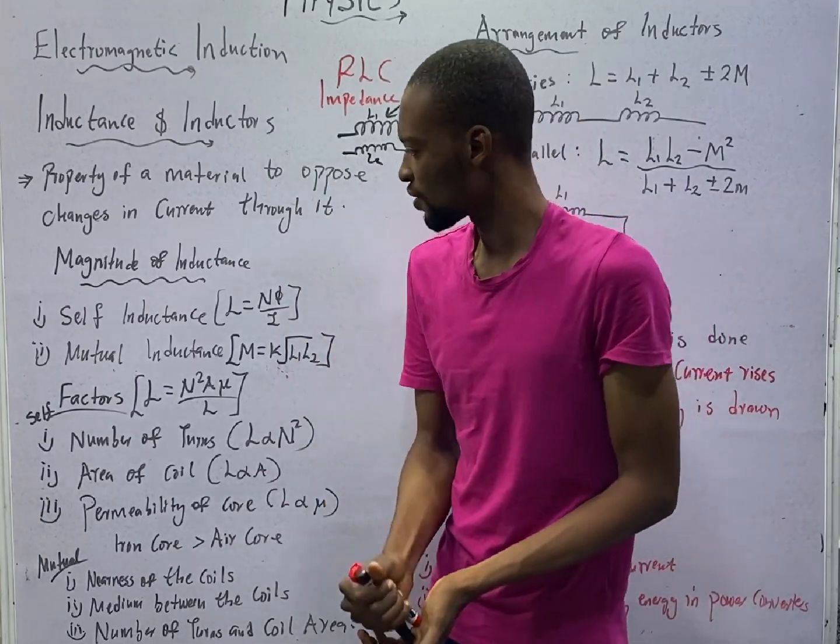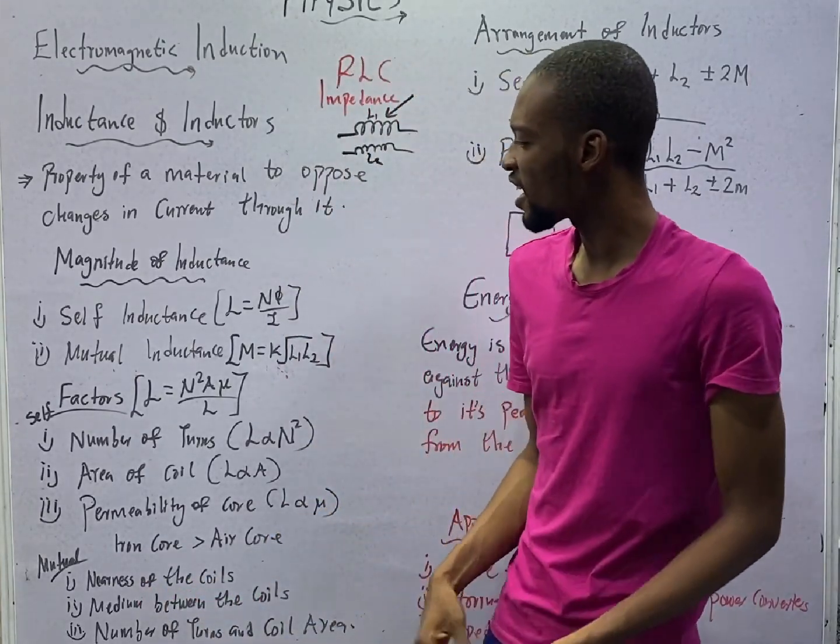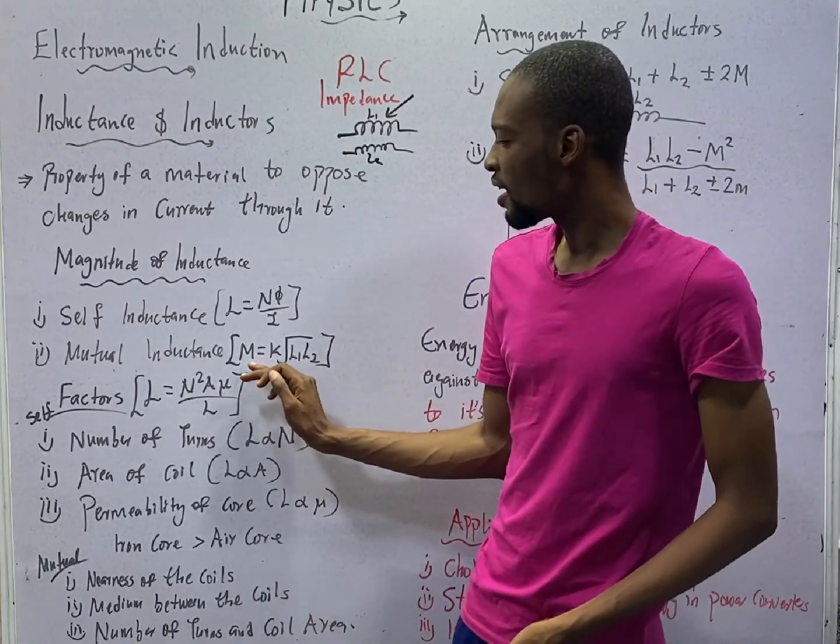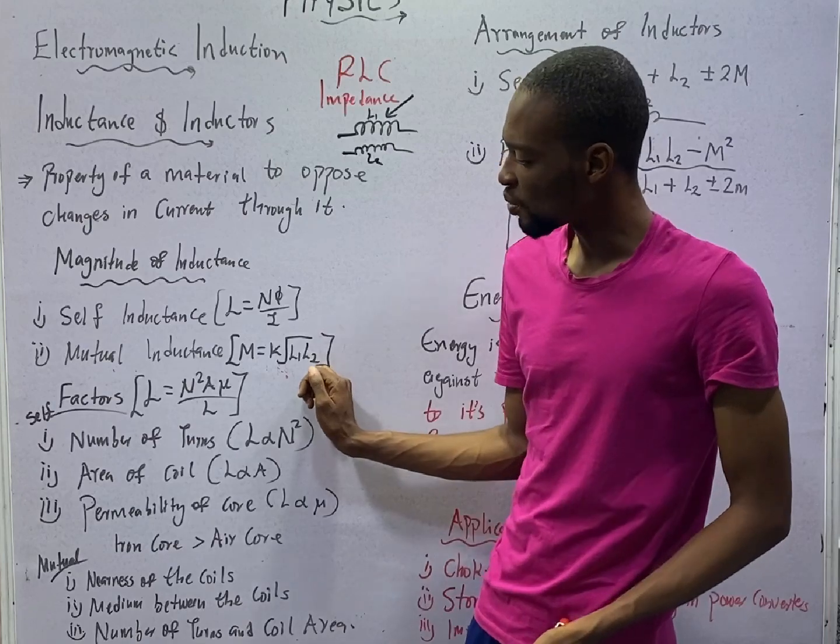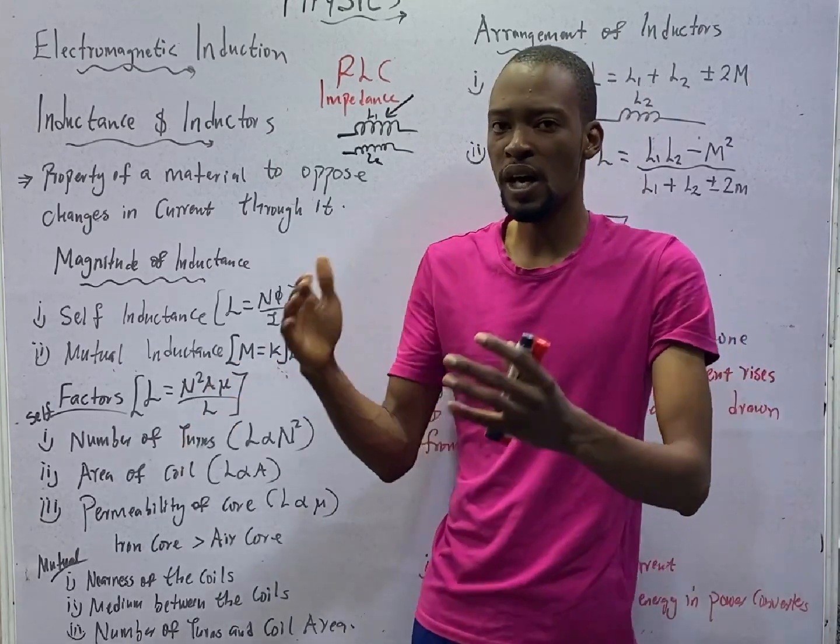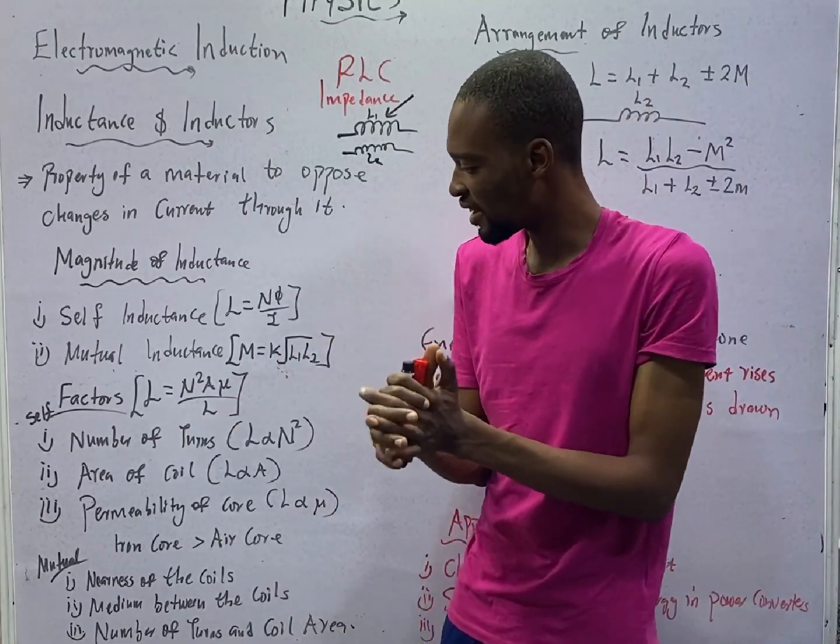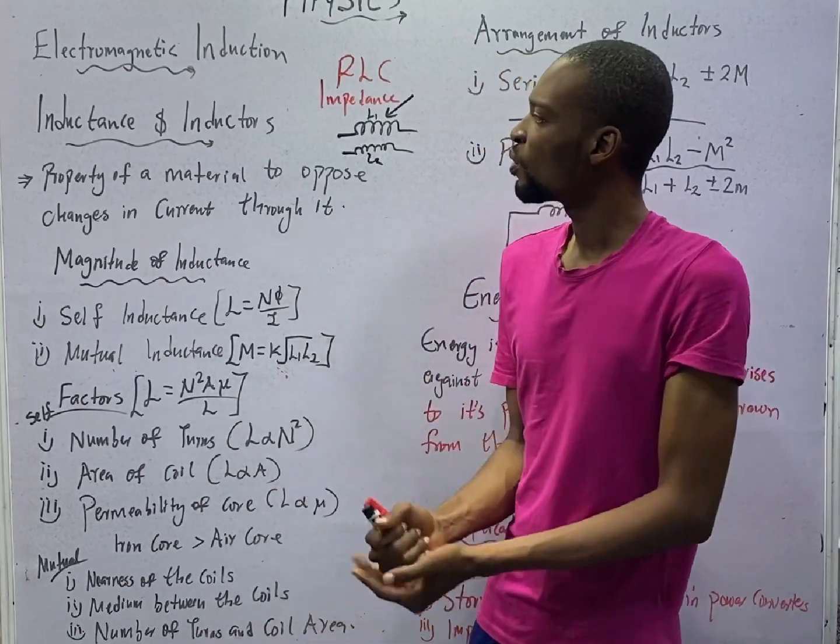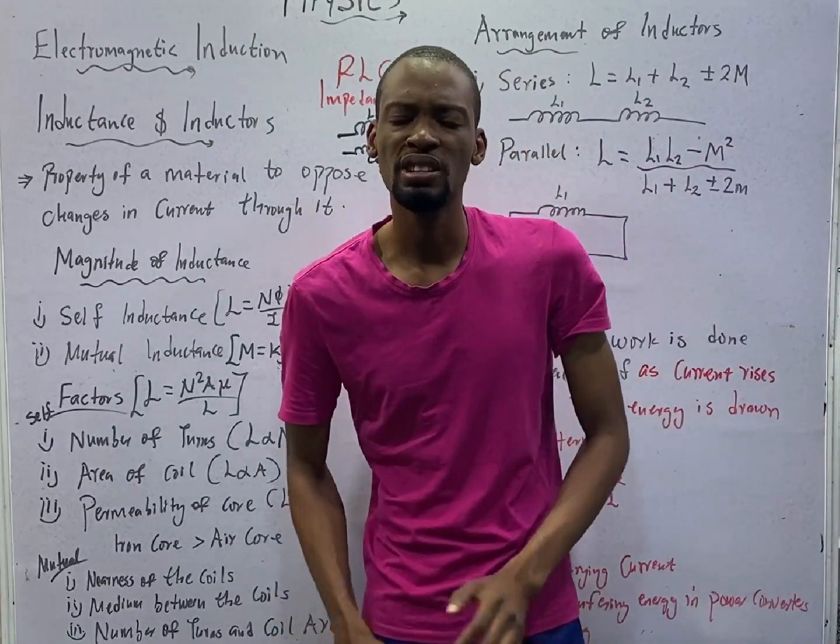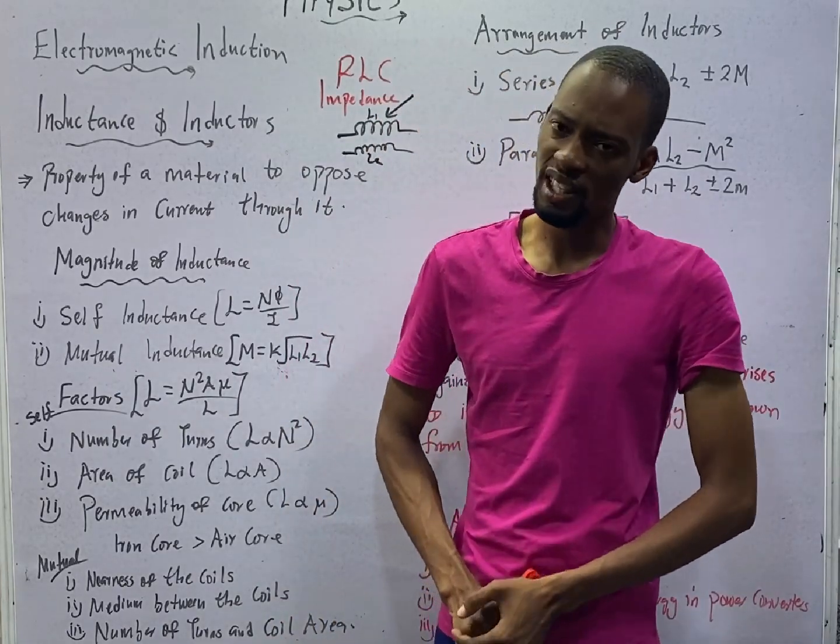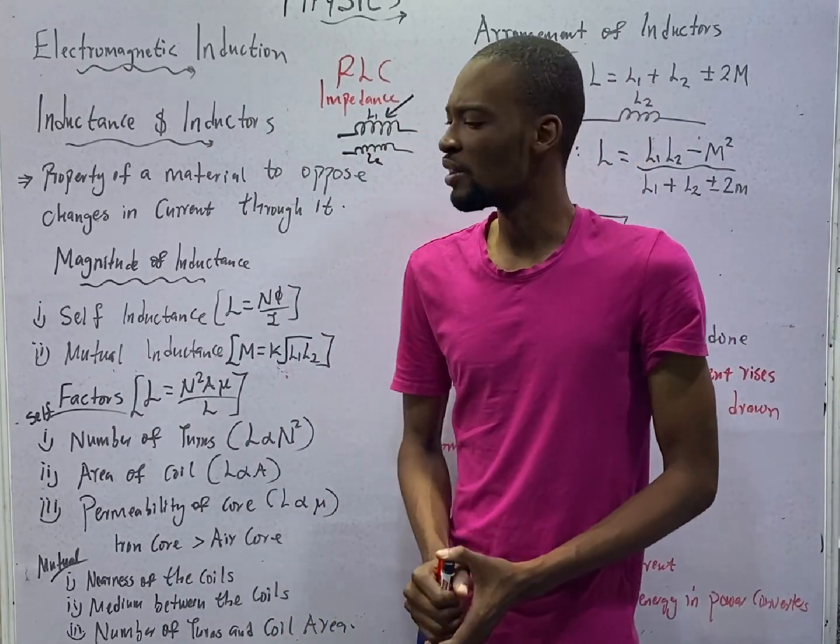This is a JAMB question. So, for mutual inductance, it is represented by M and M is equal to K root L1 L2. And K is the mutual coupling between them. So, we know that self-inductance takes place in only one inductor and mutual inductance is between two inductors.